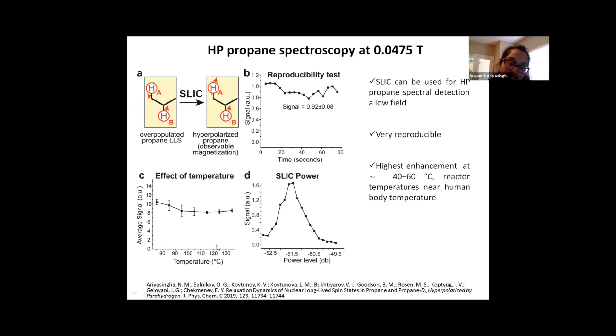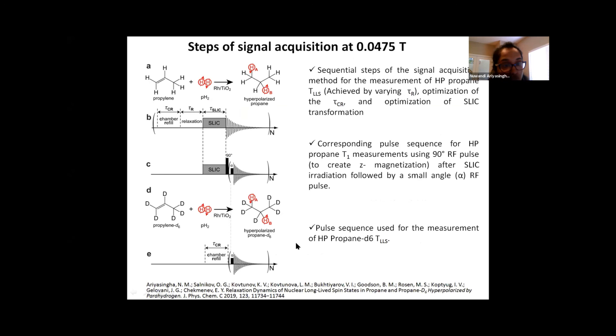Similar to the high field detection, we also studied the effect of temperature. So if you look at the plot C here, the highest signal was obtained at around 40 to 60 Celsius, which is good because it's closer to the human body temperature. And these are the pulse sequences that were used to acquire the signal at the low field. And you saw this slide yesterday as well. So I'm just going to go very briefly through this one. The pulse sequence B was used to study the TLS data of the hyperpolarized propane. So we fill the chamber, let it relax, and send the SLIC sequence and then FID detection. So we repeat this many times by varying the relaxation decay in order to get the decay data.